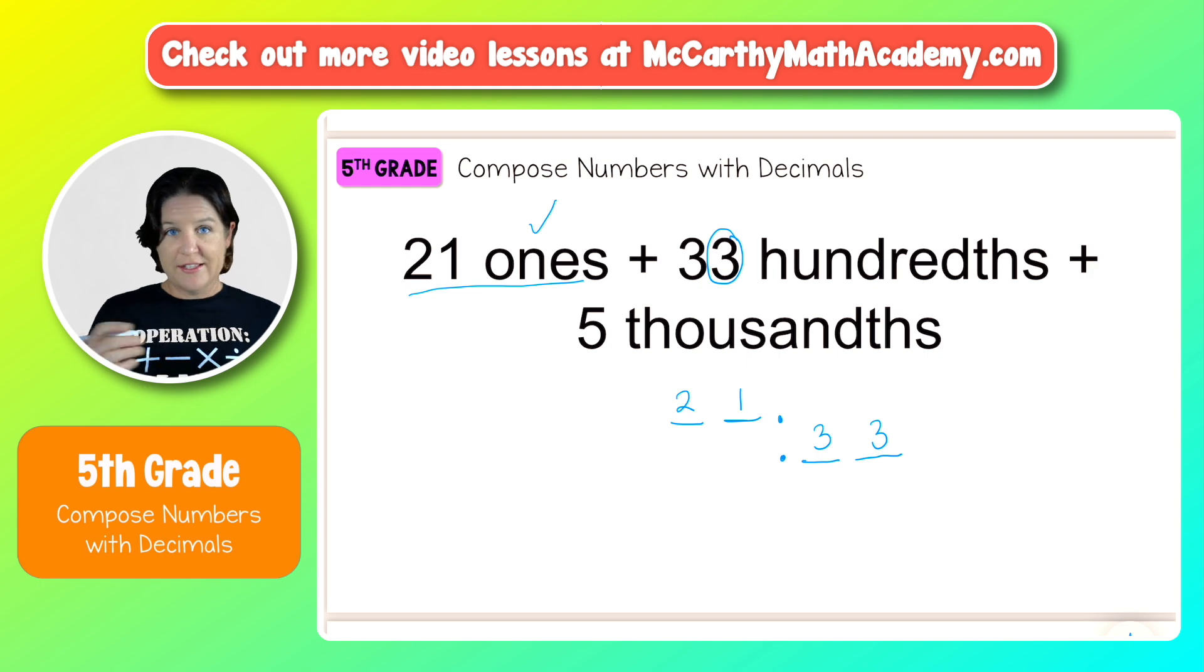Because I now have digits in the tenths and the hundredths place, let me throw some zeros up here with that 21 ones, just so I'm keeping in mind that I'm lining up those values. Alright, we got this one. Now we have five thousandths.